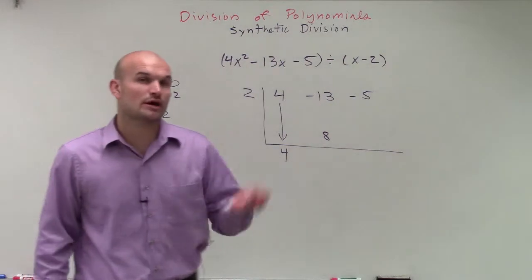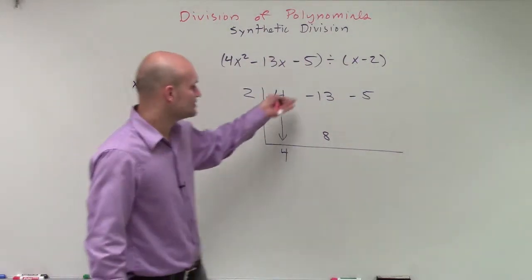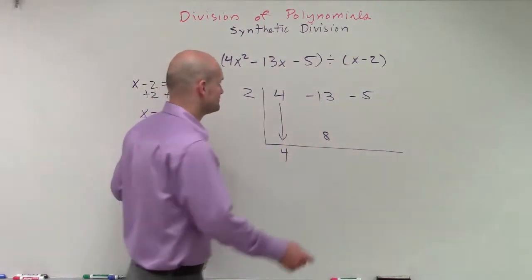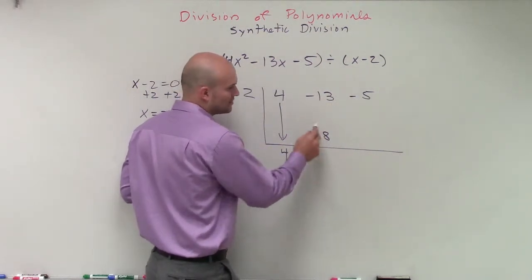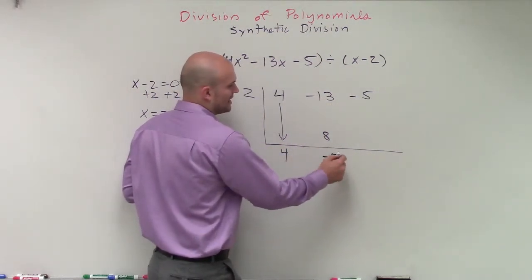Now, unlike long division, where we are always subtracting, here what we're going to do is add vertically. So I do negative 13 plus 8, which is going to be a negative 5.